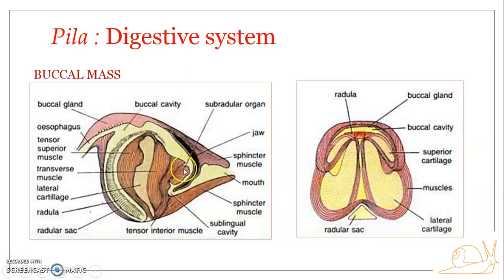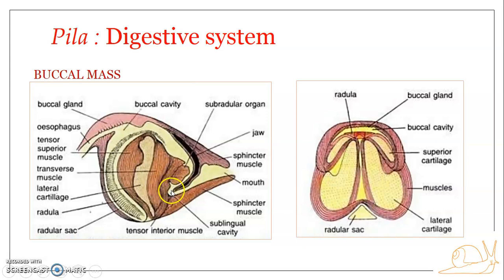Anteriorly, the odontophore forms a small process known as the subradular organ, which you can see here. The subradular organ forms a roof over a space known as the sublingual cavity.